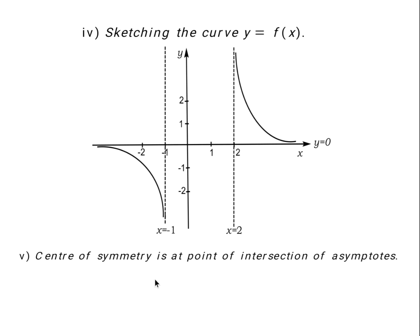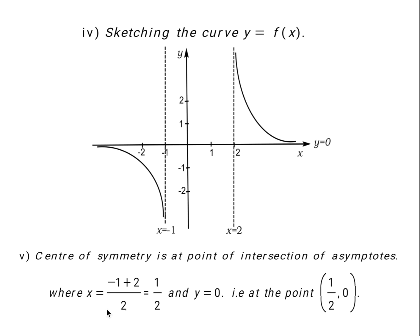We move to the last part, asking for the center of symmetry, which is located at the intersection of the asymptotes. Since there are two vertical asymptotes, the point of symmetry lies midway between them and on the horizontal asymptote y equals 0. To get the x-coordinate, we take the average of negative 1 and 2, which gives one half. The y-coordinate is simply 0, the value of the horizontal asymptote. So the center of symmetry on the curve is the point (1/2, 0). Thanks for watching and see you in the next video.